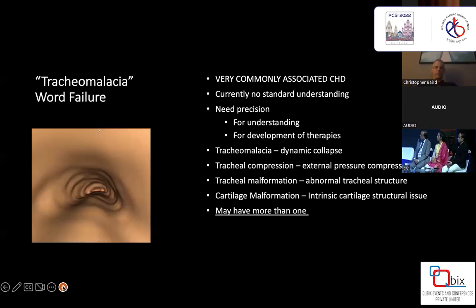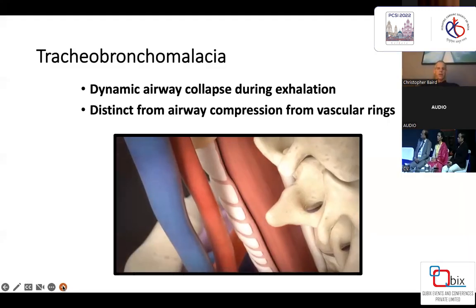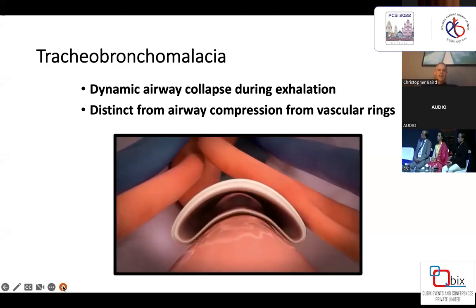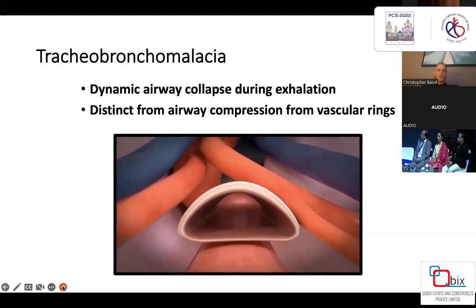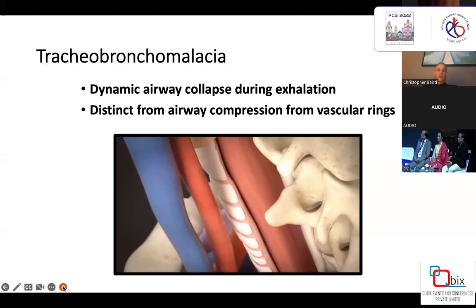Tracheobronchial malacia is very commonly associated with congenital heart disease, and currently there is no standard understanding of its true effect. We need precision for understanding and development of new treatments. Tracheobronchial malacia involves dynamic collapse; tracheobronchial compression is external compression on the trachea; tracheobronchial malformations are abnormal structures; and cartilage malformation is intrinsic cartilage structural tissue. Importantly, you may have more than one. It is very distinct from airway compression from vascular rings.